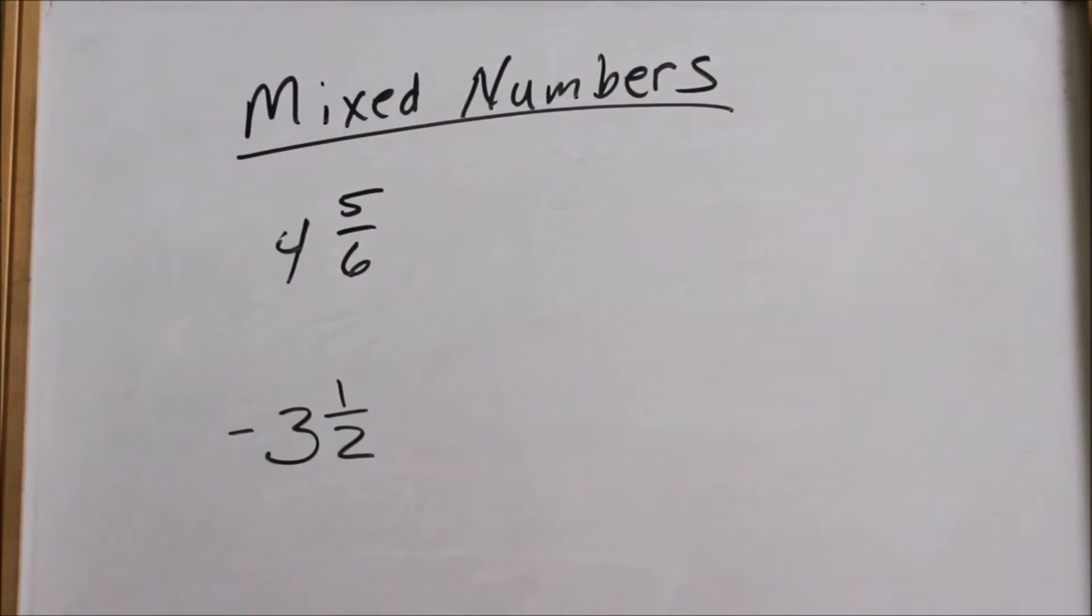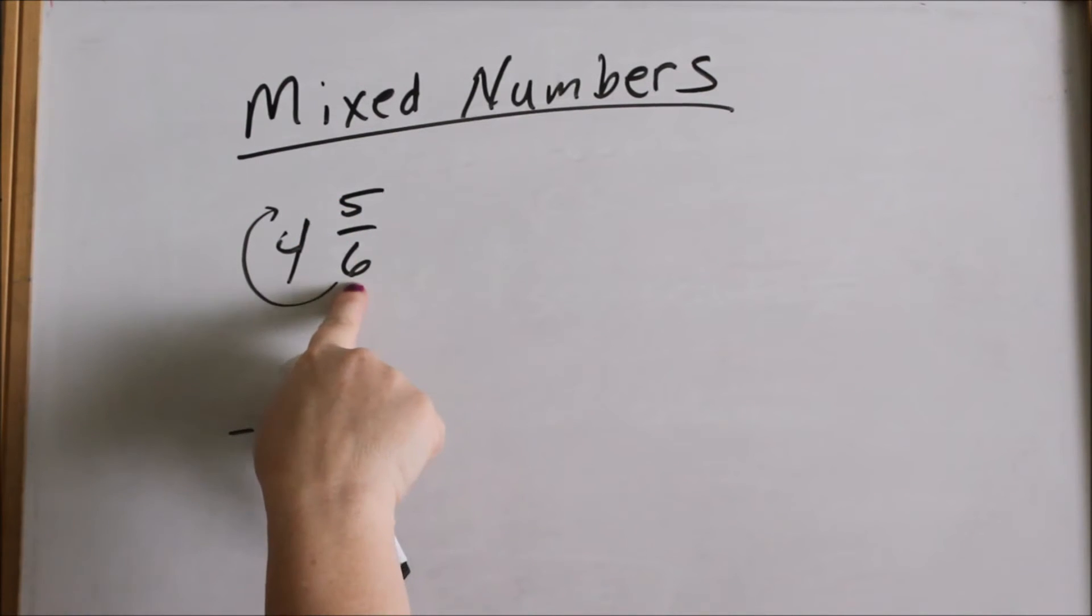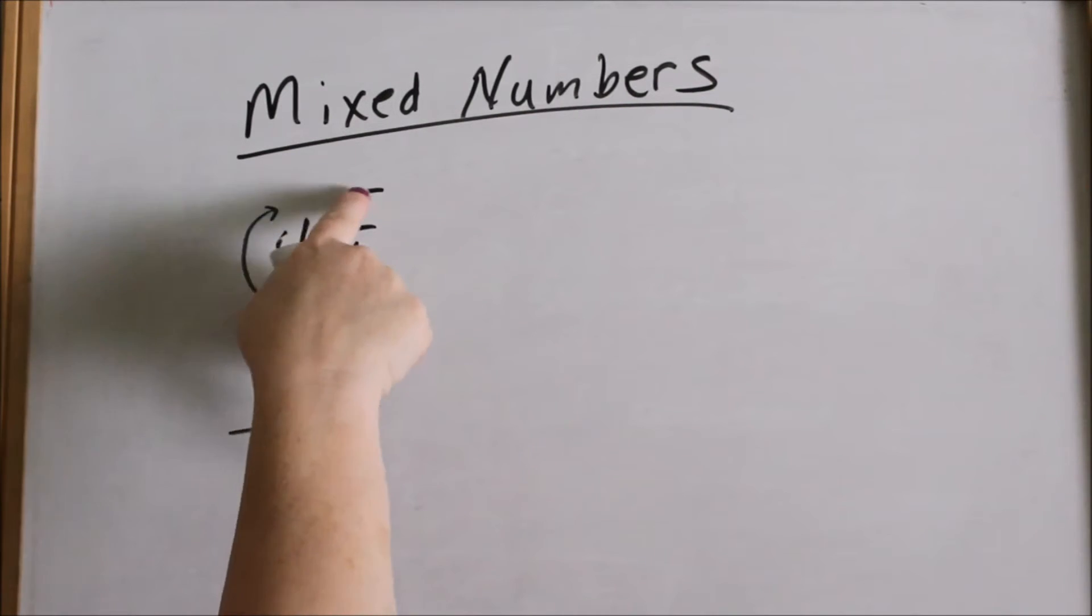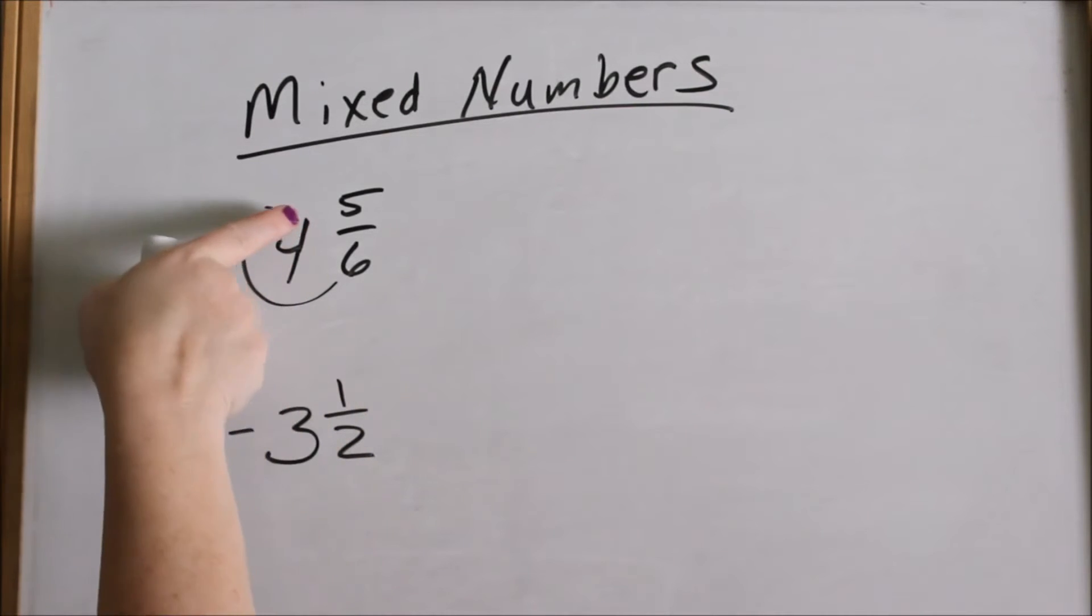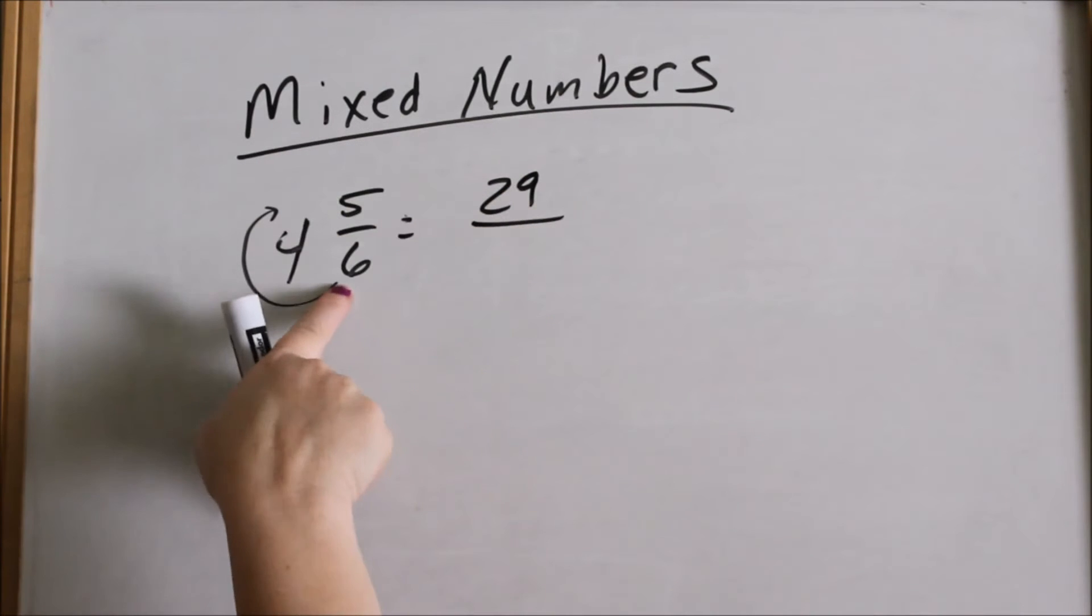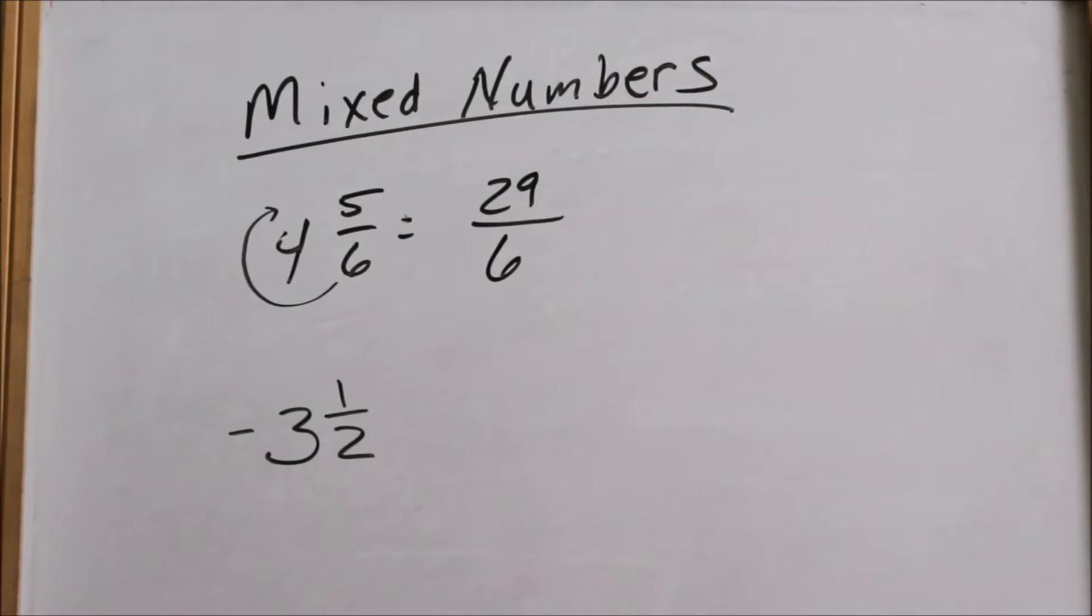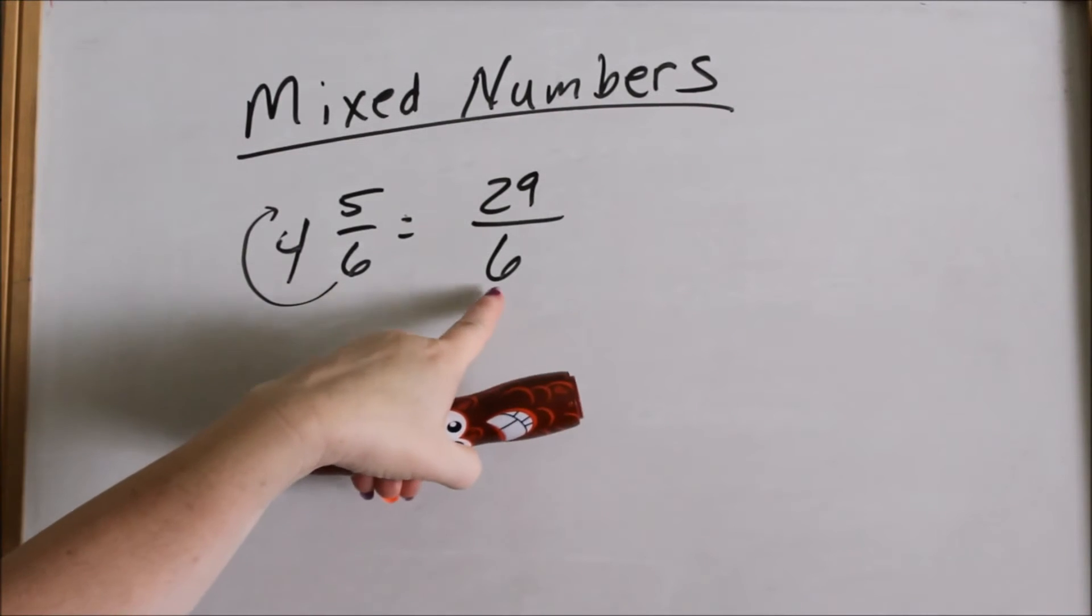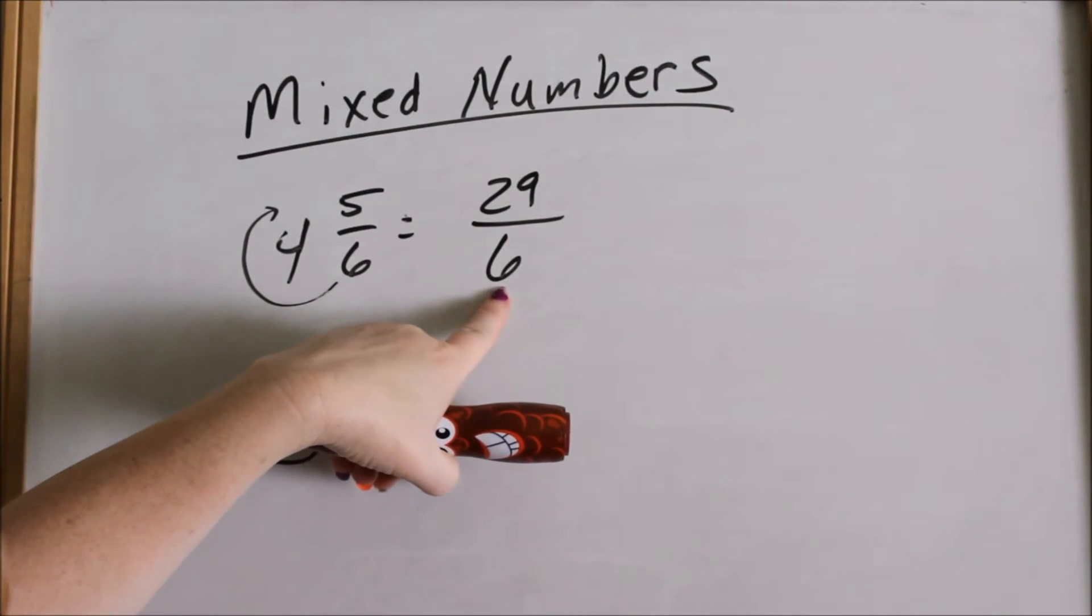So four and five-sixths. I want to change that into an improper fraction. The way you do it is, if you can remember, to kind of go around the circle. Start here. You take your six and you multiply it by the four and then you add the five. So six times four is 24 and then twenty-four plus five is twenty-nine. And you keep your same denominator. So the six stays the same. So four and five-sixths is the same thing as twenty-nine-sixths. We've changed our mixed number into an improper fraction.